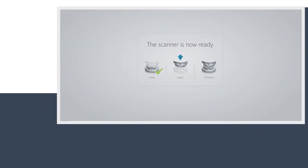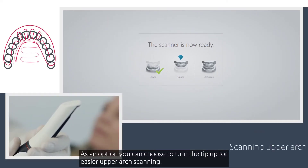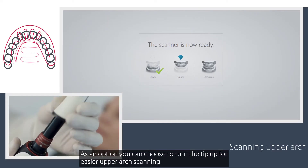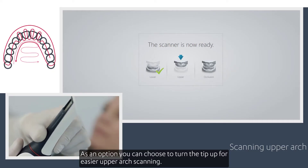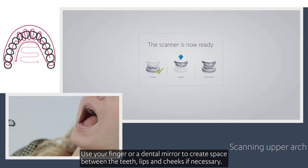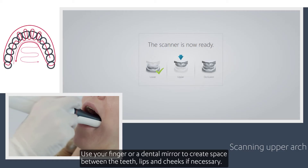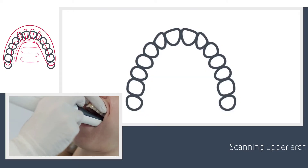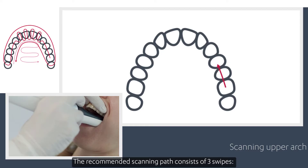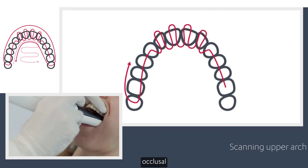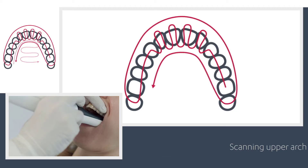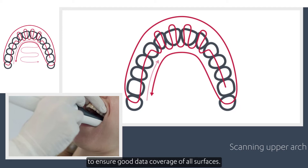Upper arch. As an option, you can choose to turn the tip up for easier upper arch scanning. Use your finger or a dental mirror to create space between the teeth, lips and cheeks if necessary. The recommended scanning path consists of three swipes — occlusal, buccal and palatal — to ensure good data coverage of all surfaces.